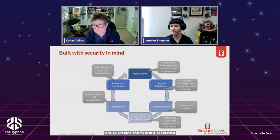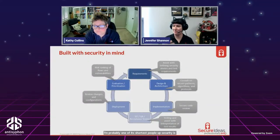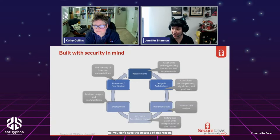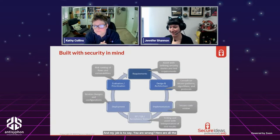I'm five-foot-five, probably one of the shortest people at Secure Ideas, and I'm very frequently brought into client meetings to be the muscle — to be the bad guy. The security team says 'we need this,' the development team says 'no you don't,' and my job is to say: you are wrong, here are all the ways you are wrong — so I can be the bad guy, not the security team.